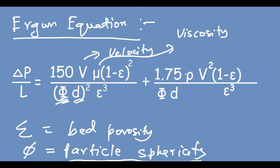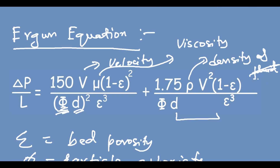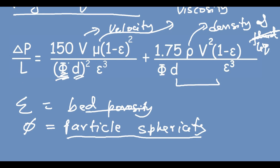In this part of the equation, ρ (rho) is the density of the fluid — the liquid that is flowing. ε is again the bed porosity, d is the equivalent diameter of the packing material, and φ is the particle sphericity. This equation is a summation of two terms.